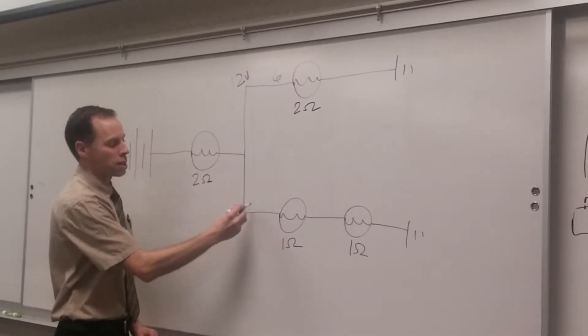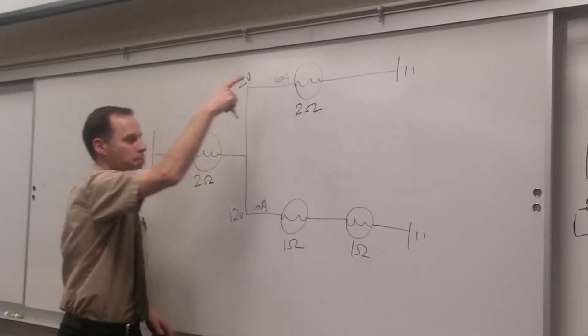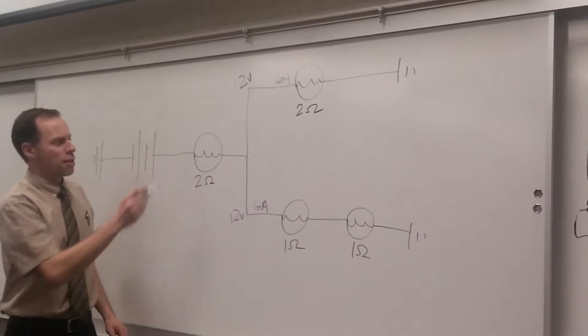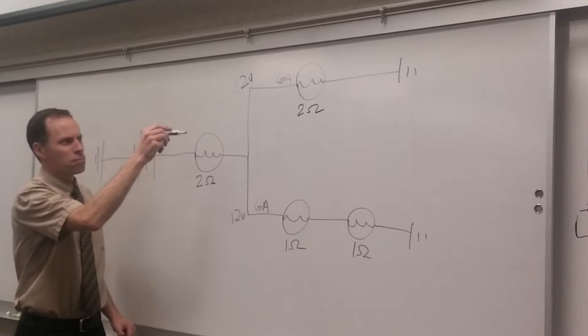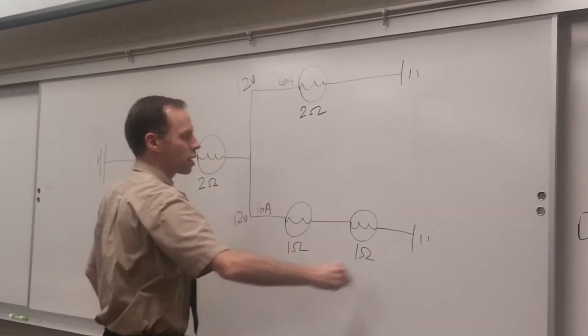For a total of 12 amps, right? Which means how many ohms is this total? One. I've got 12 volts and 12 amps. It means that this portion of the circuit right here is equal to one ohm.